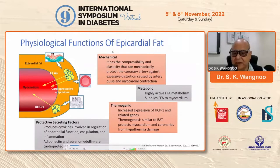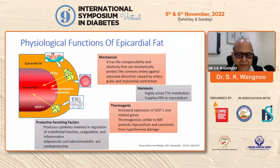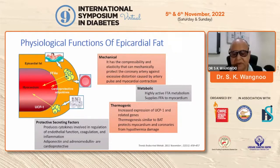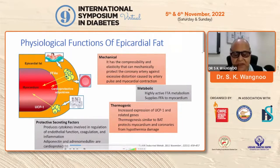The mechanical function: it has compressibility and elasticity that can mechanically protect the coronary arteries against excessive distortion caused by arterial pulse and myocardial contraction. Metabolically, the highly active free fatty acid metabolism supplies free fatty acids to the myocardium. Thermogenically, increased expression of uncoupling protein 1 (UCP1) and related genes drives thermogenesis similar to brown adipose tissue, protecting the myocardium and coronaries from hypothermic damage. One of the protective secreting factors produces cytokines involved in the regulation of arterial function, coagulation, and inflammation. Adiponectin and adrenomedullin are cardioprotective.